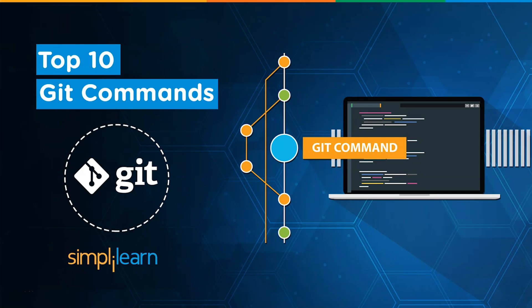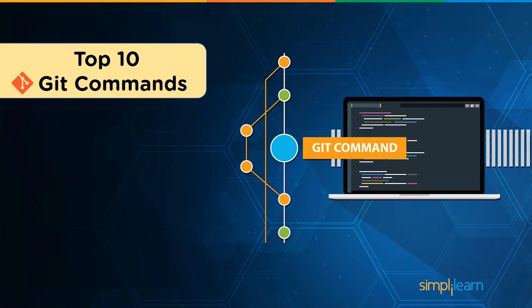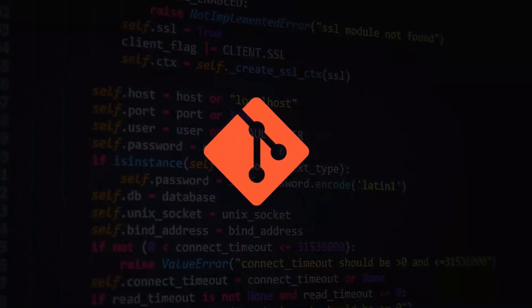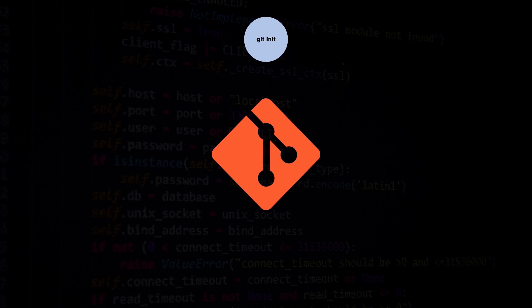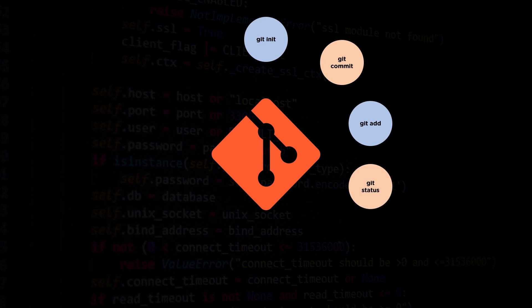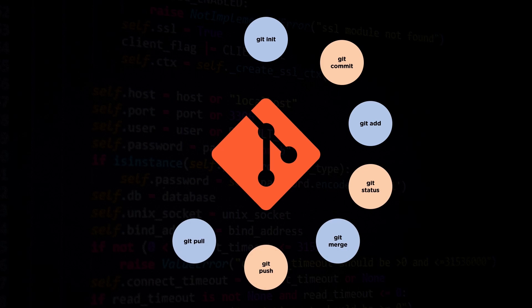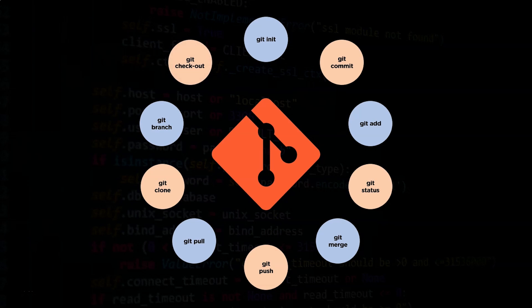Let us first have a look at all the top 10 commands that we will be covering today. We shall see the git init command, followed by the git commit command and the git add command. Then we shall see the git status command and the git merge command. Moving forth, we will check the git push command, git pull command, and the git clone command. Towards the end, we shall learn the git branch command and the git checkout command.